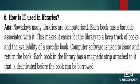Library में कौन सी book कहाँ पर रखी है, या किस book की availability है या नहीं — वह पता लगाना बहुत easy हो जाता है। Computer software is used to issue and return books. Each book in the library has a magnetic strip attached to it that is deactivated before the book can be borrowed. जब book किसी को borrow दी जाती है तो उस magnetic strip को deactivate किया जाता है।